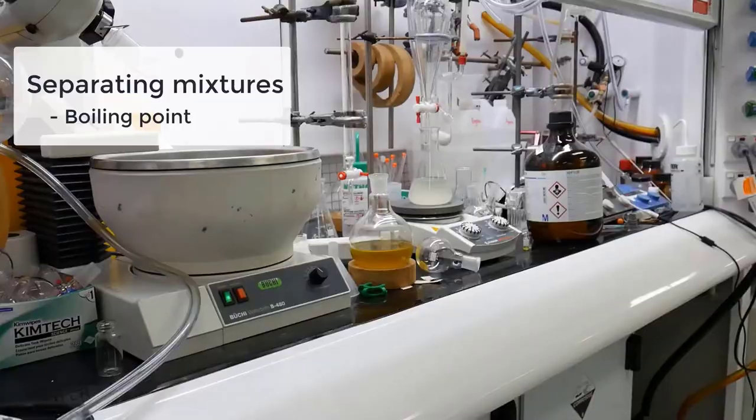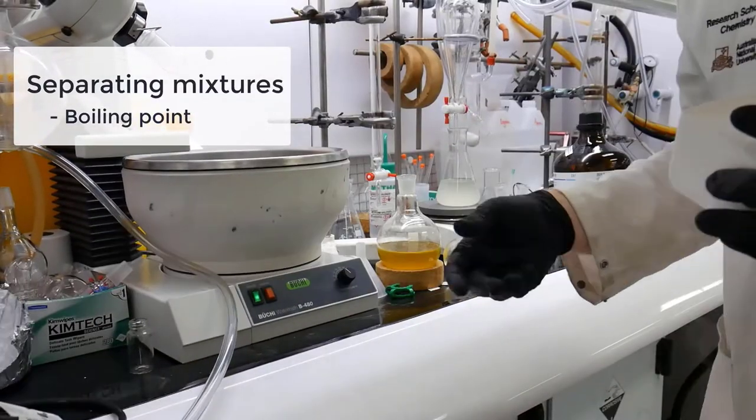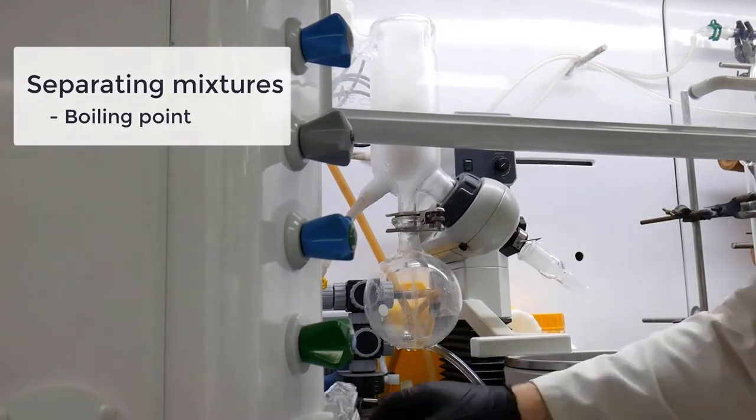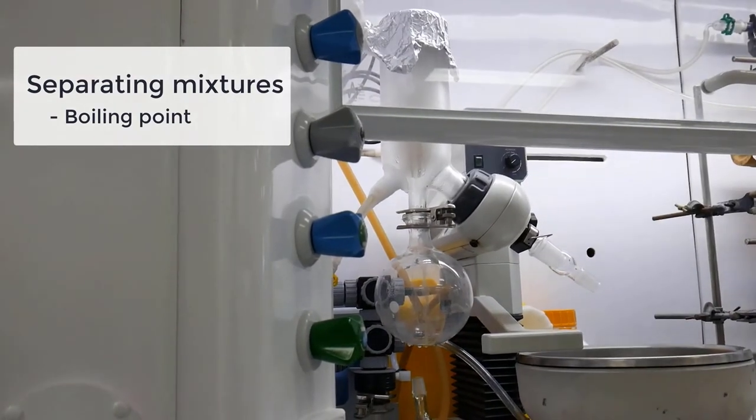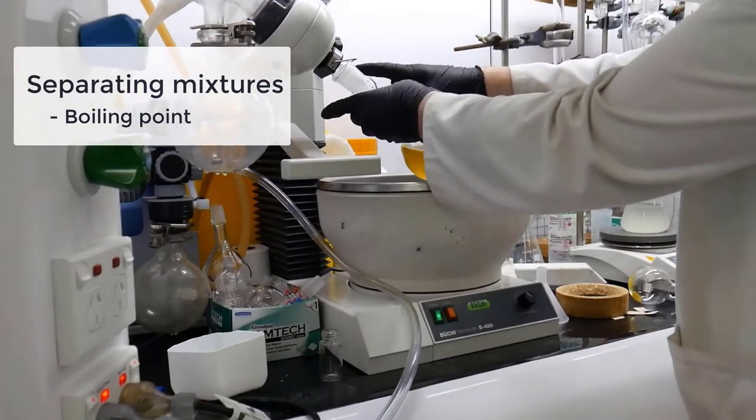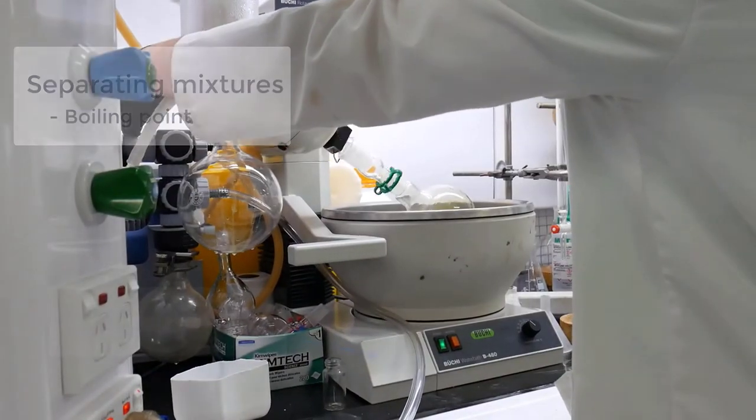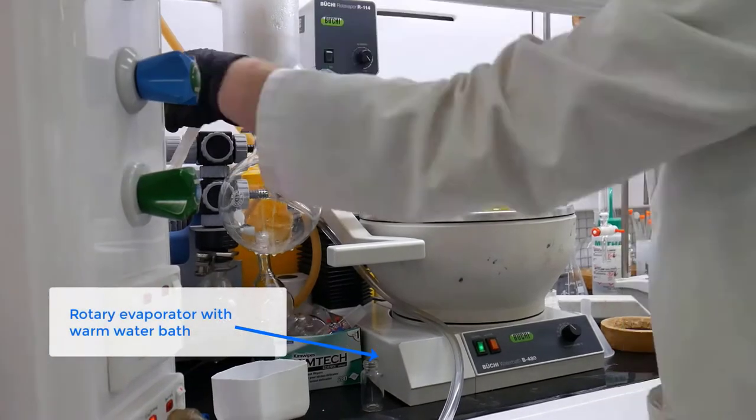So now my mixture is a mixture of the solvent that I've used to dissolve my solution and my solid mixture of products. And I want to remove the solvent, so I can use the low boiling points of this solution to evaporate it off, leaving just the solid products that I want.